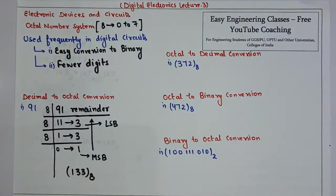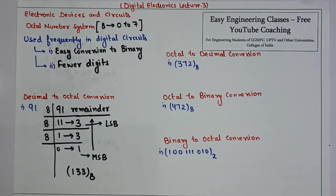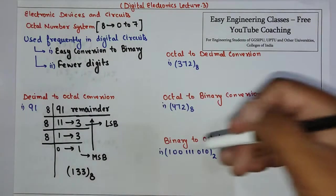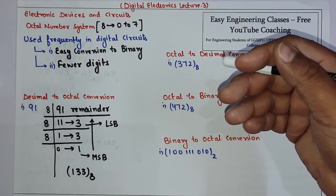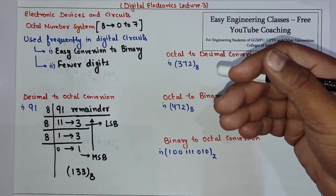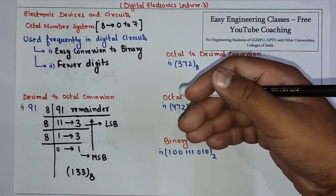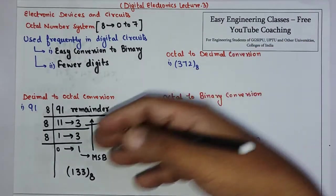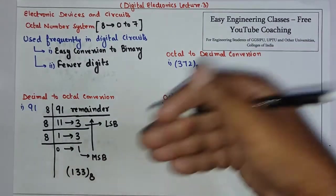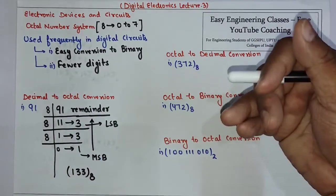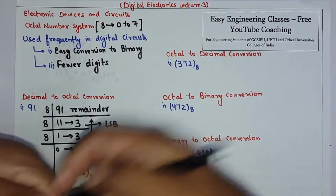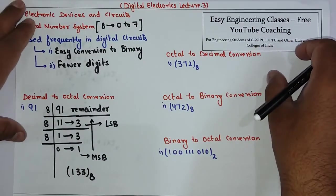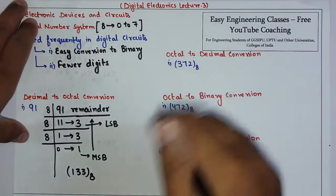This is the conversion of decimal to octal. We divide by 8 and write down the remainders. Now let's move on to octal to decimal conversion.